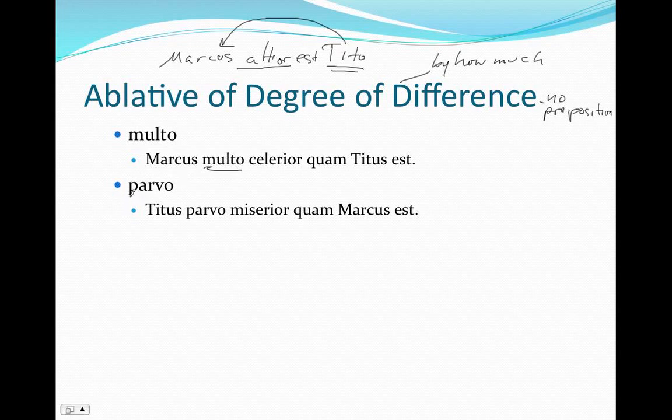The other common word that's often found as the ablative of degree of difference is parvo. Titus parvo miserior quam Marcus est - Titus is a little bit more wretched than Marcus. So molto and parvo are common ablatives of degree of difference.